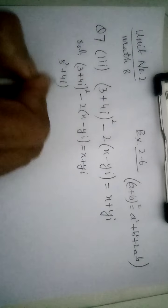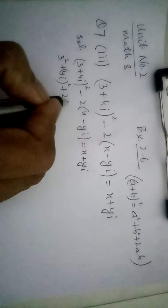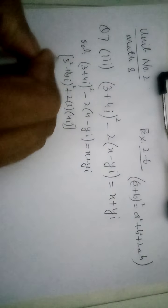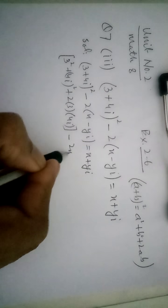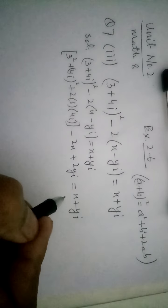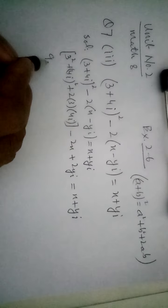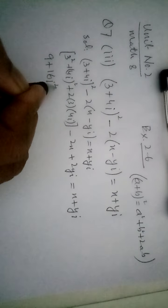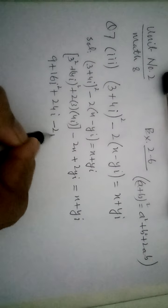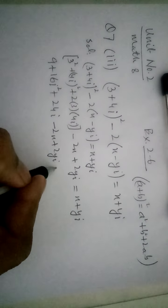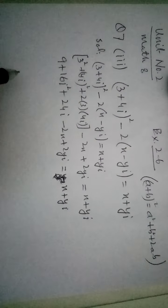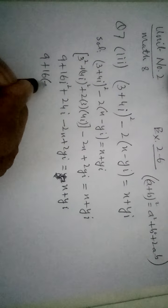So 3 ka square plus 4 iota ka square plus 2 into 3 into 4 iota. And then yaha bracket open karenge: minus 2x plus 2y iota is equal to x plus y iota. And then 3 square is equal to 9, plus 4 square is equal to 16 iota square, and plus 2, 3s are 6, 6 4s are 24 iota, minus 2x plus 2y iota is equal to x plus y iota. Ab kya karenge? Iota square ki value put kar de. Iota square is equal to minus 1.